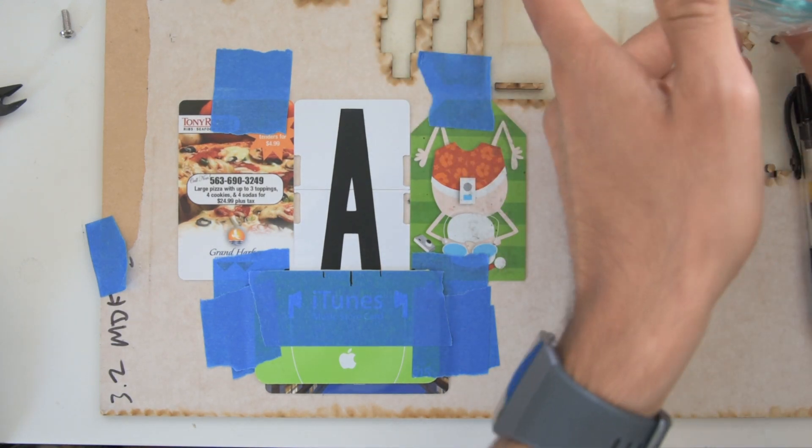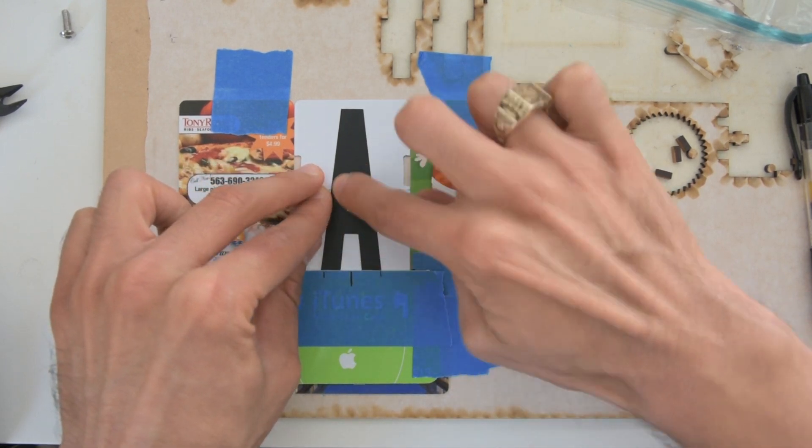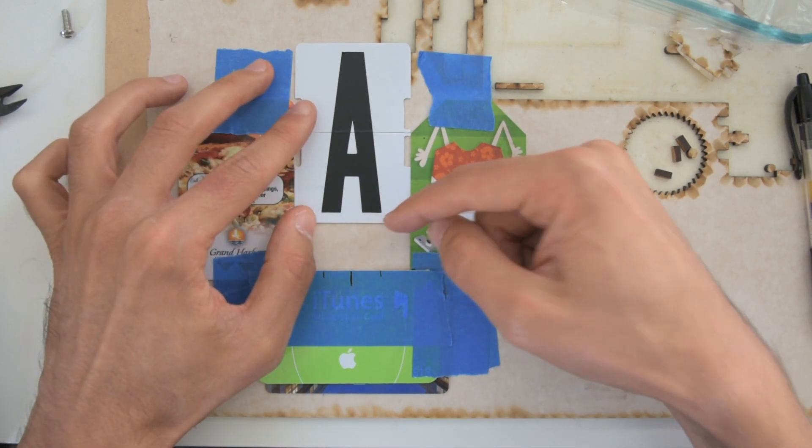And our sticker is stuck to the flaps. And we can just press down on it to make sure it's adhered everywhere. And so now if we slide this out, you can see we've got our margin on the bottom.